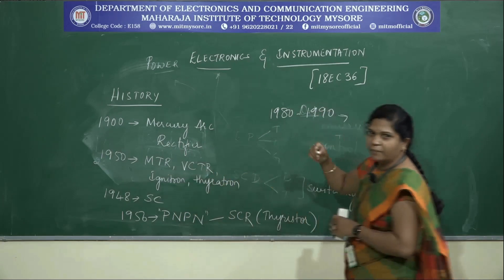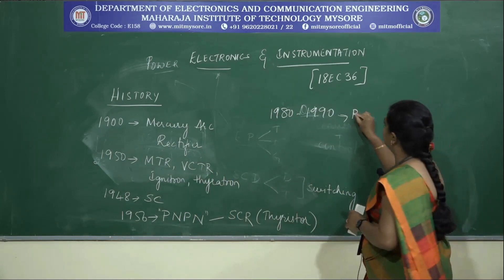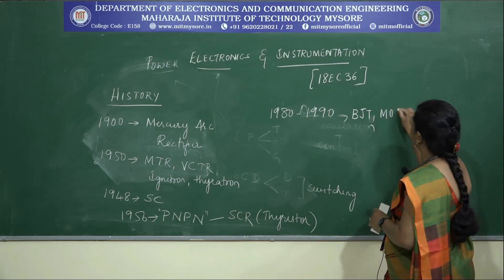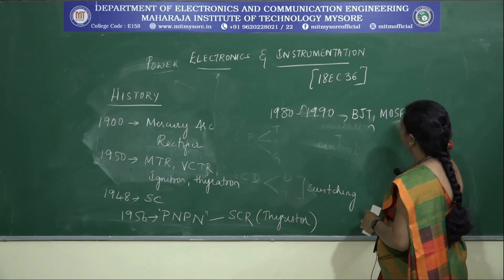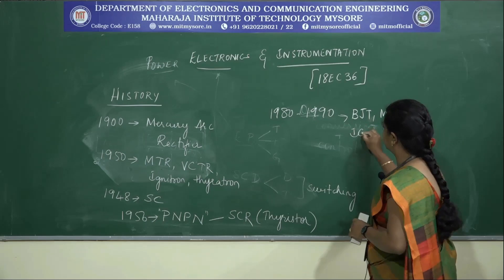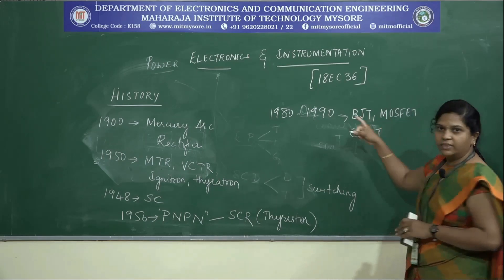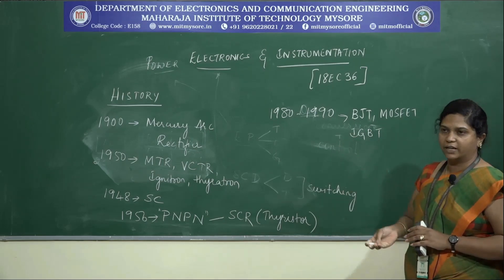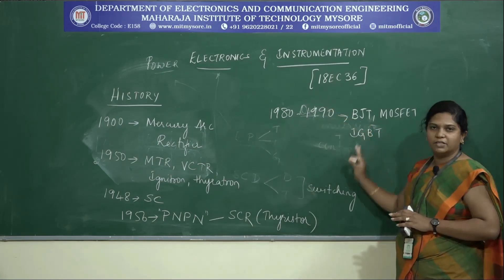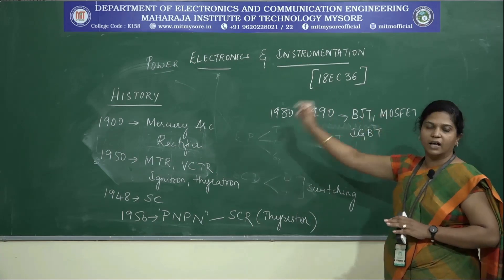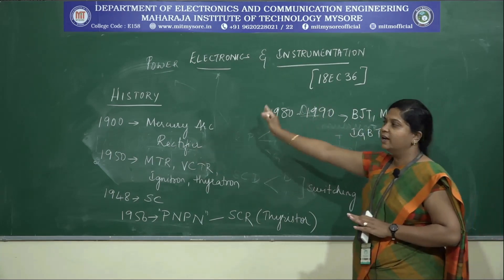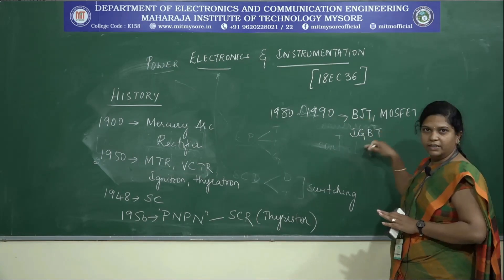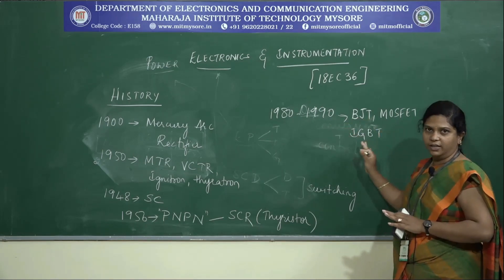The importance of power electronics came into existence and the power electronics industry continued with the same momentum from around the 1980s to 1990s, maintained by making use of different devices such as BJTs, MOSFETs, and IGBTs. With the invention of these devices, there was a boost to the field of power electronics. This is a brief history of how power conversion started and how we now use the best available devices from the electronic industry.